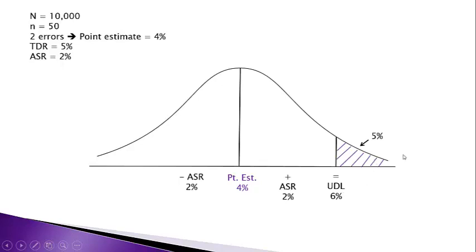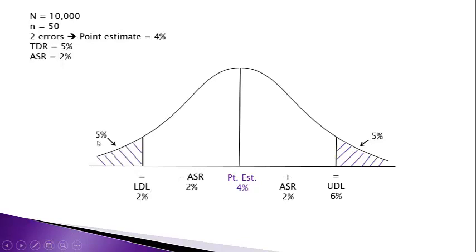In auditing, we normally assume a 5% tail. The upper deviation limit of 6% is an upper bound, just like a confidence interval in statistics. Subtracting 2% from 4% gives us the lower deviation limit of 2%, which is a lower bound. With a 5% lower tail and a 5% upper tail, we get 90% confidence — so our confidence interval is 90% that the true but unknown error rate is between 2% and 6%.